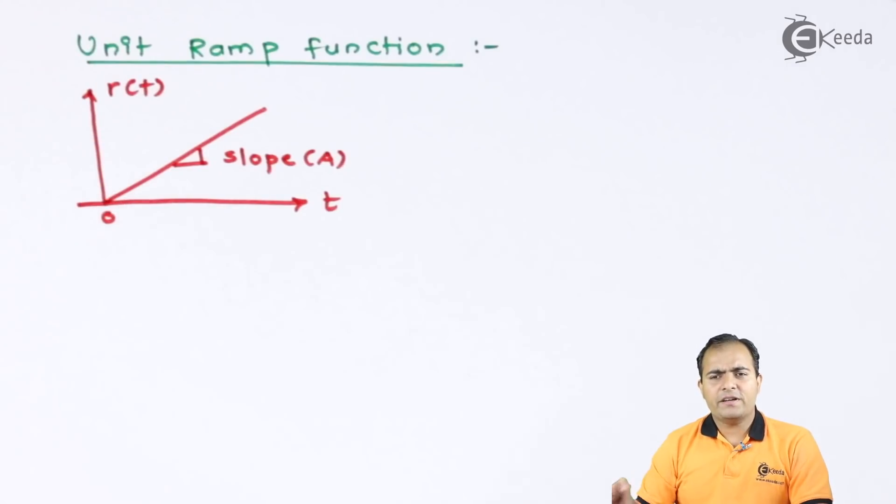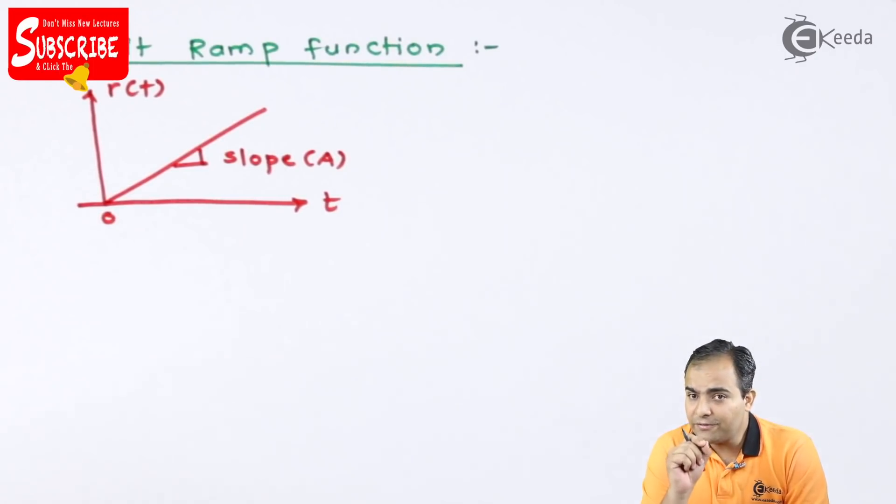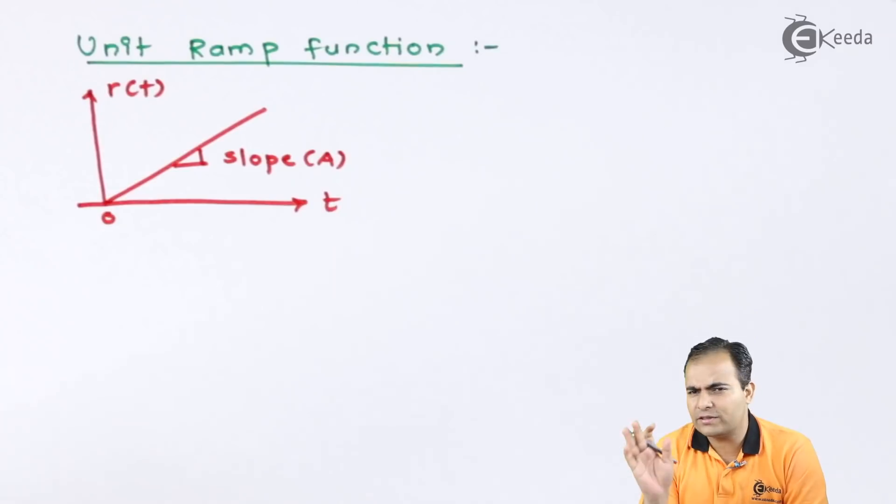This is a unit ramp function. It is not a unit, basically it is only a ramp function. The reason why it is not a unit is because if the slope value is 1, then you can say that this graph is unit ramp function. Otherwise it is only a ramp function. If the slope value is 1, then it is a unit ramp.